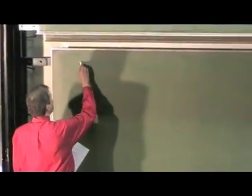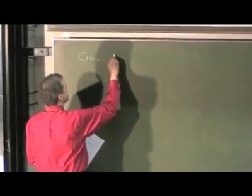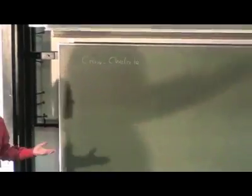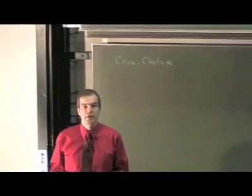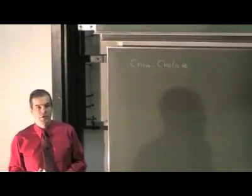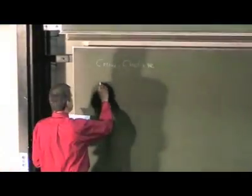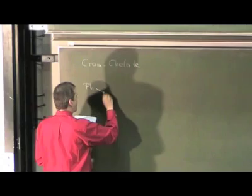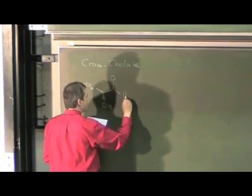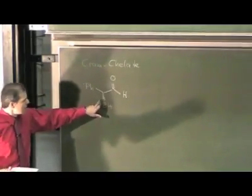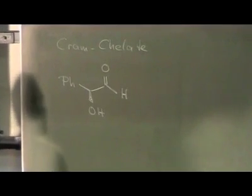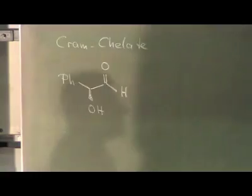Let me just very briefly recall what we started last lecture on the Cram chelate model, which is a tool to understand carbonyl additions to compounds which have an alpha chiral center. And the one case we looked at so far have been compounds which contain in the alpha chiral center a substituent which is able to chelate with an organometallic compound such as a Grignard compound.